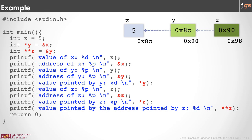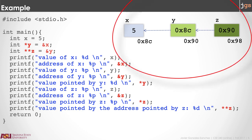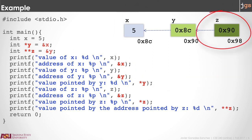So we have pointers that store the address of variables, but we can have pointers that store the address of another pointer — something like this picture. In order to do this, we need to create a pointer to a pointer, and that means using two asterisks. So asterisk asterisk c is a variable that is going to store the address of a pointer — in this case y. So you can store the address of y in c, and then in y you can store the address of x, and x is a variable.